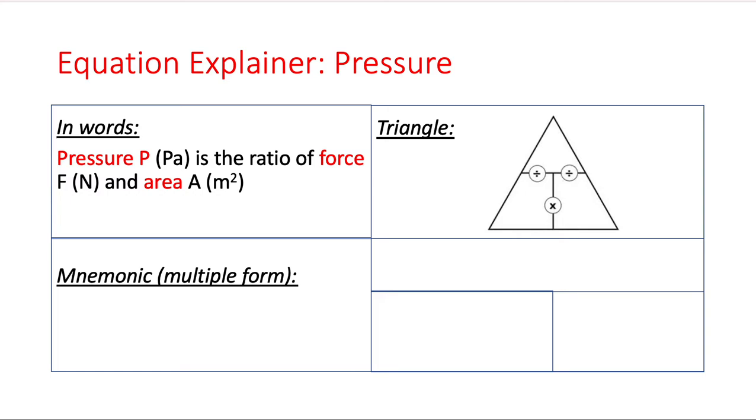Now we want to look at a calculation, so we're going to look at the triangle. This time we're going to construct our triangle in a slightly different way, going from the definition. Pressure is the ratio, so we're expecting pressure to be on one of those bottom sides. It's the ratio of force, which is on the top, to area. Pressure is the ratio of force to area, which means that force goes on the top and pressure and area are on the bottom.